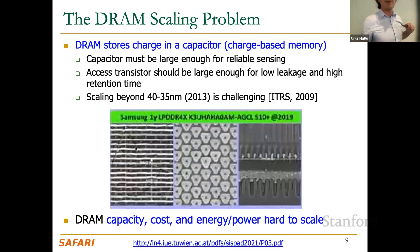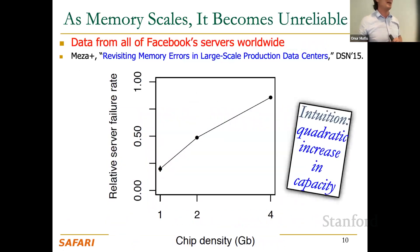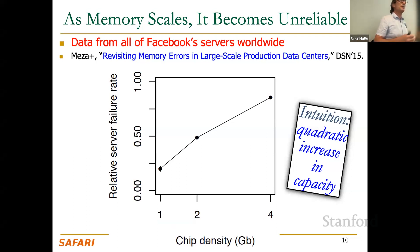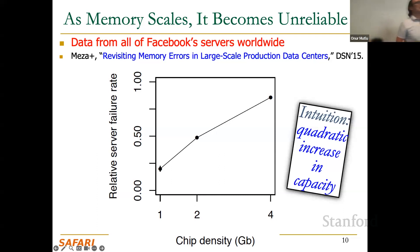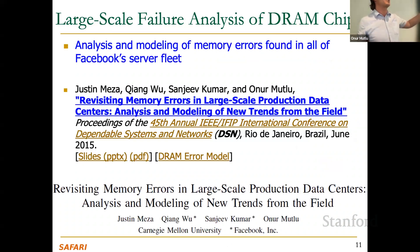DRAM is used in all main memories we build today. We did a large-scale study with Facebook in 2015 where we analyzed all memory errors across all their data centers. They didn't allow us to publish how much memory or how many servers, but we found that DRAM chip density is strongly correlated with server failure rate. The denser the DRAM chip, you get more errors — cells are smaller and closer to each other, so there are a lot more reliability and noise issues.